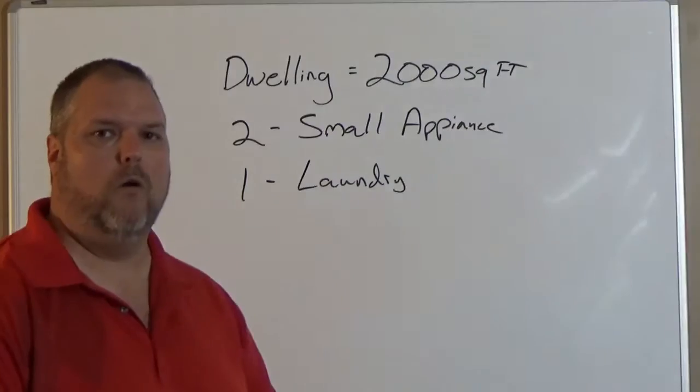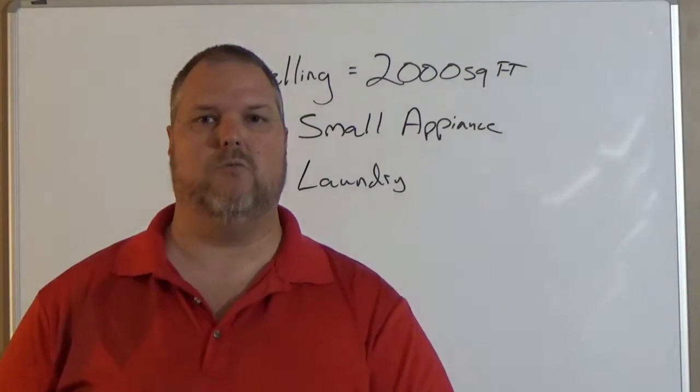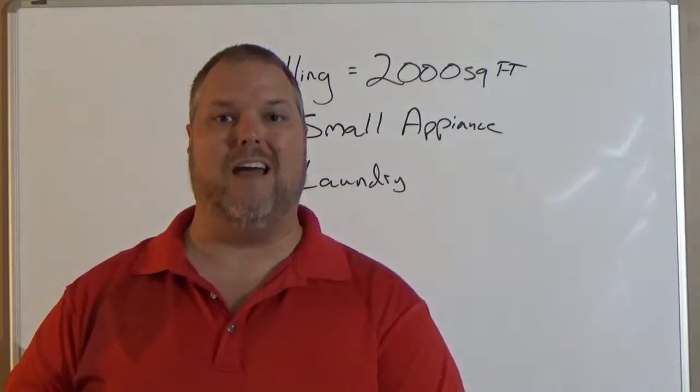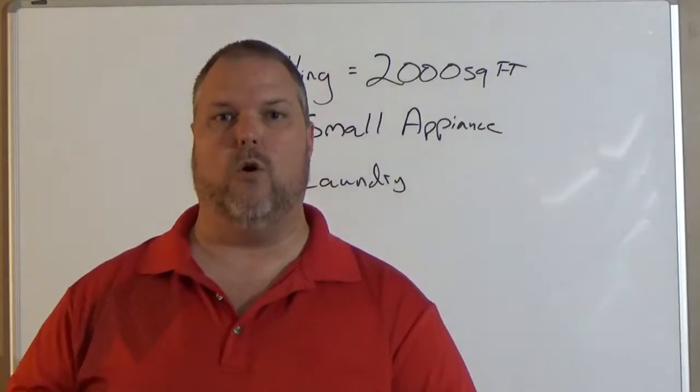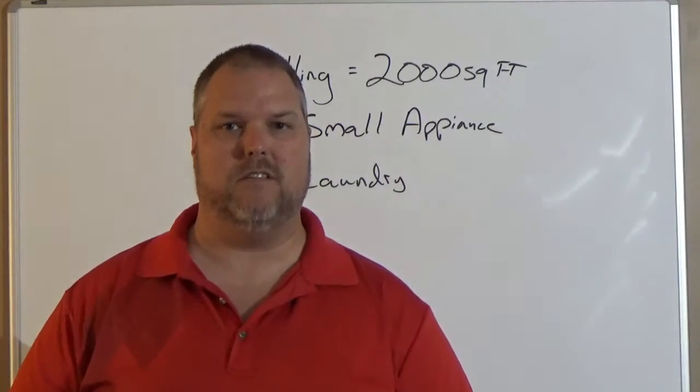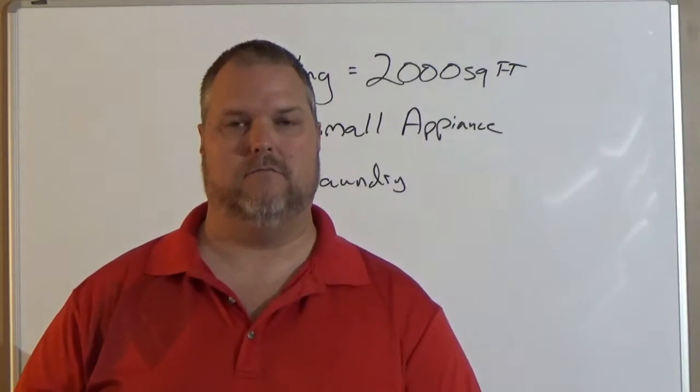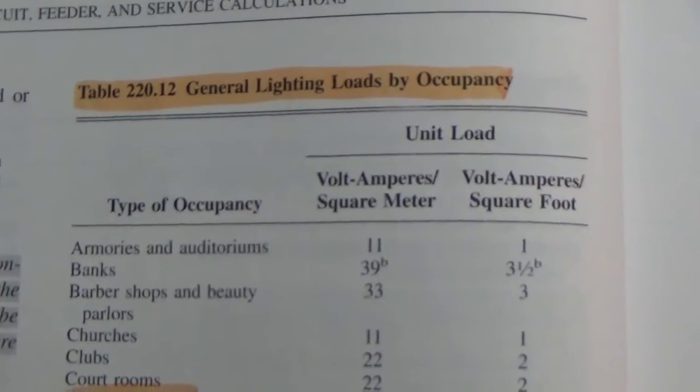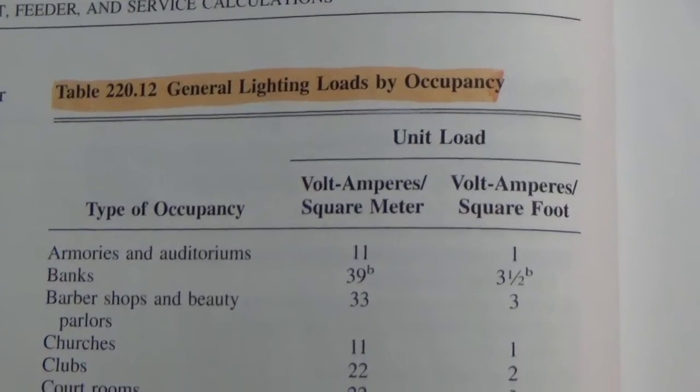Our dwelling is 2,000 square feet. We have two small appliance circuits and we have one laundry circuit. This is all you need to size the general lighting load. I have to take the square footage and break it down into a VA, or a wattage. VA stands for volt amps. Volt amps is the same as watts. How do we find VA? Come over to the code book and we look at Article 220.12, General Lighting Loads for Occupancy.